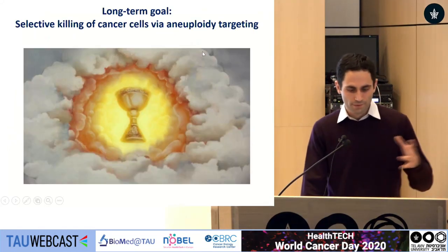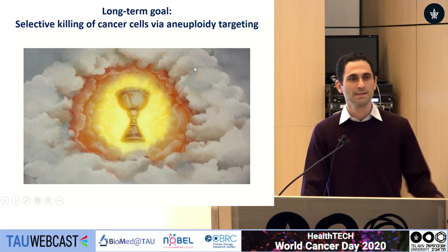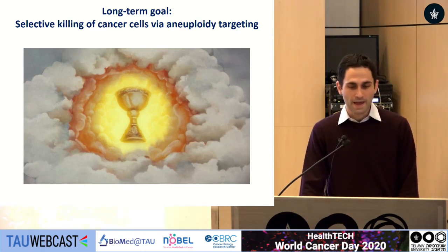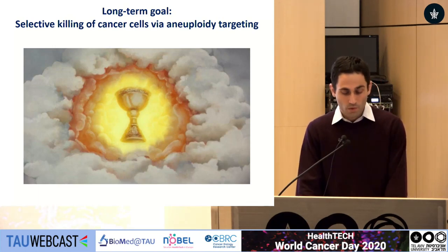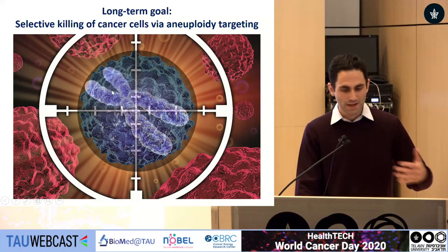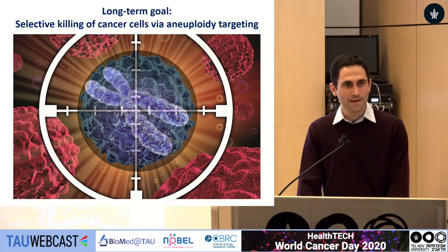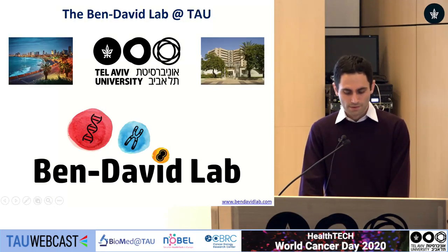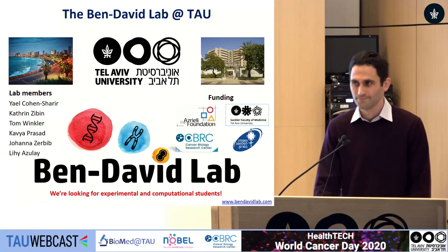Much of what we've heard today focuses on selectively killing cancer cells — that's the name of the game. It's easy to kill cells; you can pour bleach and they die. The hard thing is doing it without killing normal cells. As Professor Erez mentioned, we need to find the Achilles heels of cancer. What we believe is that aneuploidy — this gross change in chromosome number in cancer cells — can be one such Achilles heel. I want to acknowledge all the people who contributed to these studies, most of which was done when I was a postdoc at the Broad Institute, as well as my current lab members and funding agencies. Thank you for your attention.